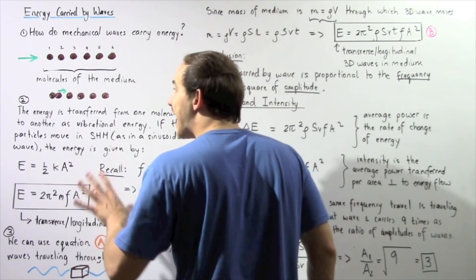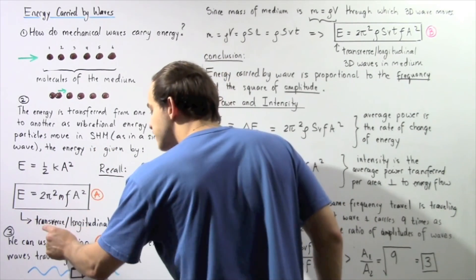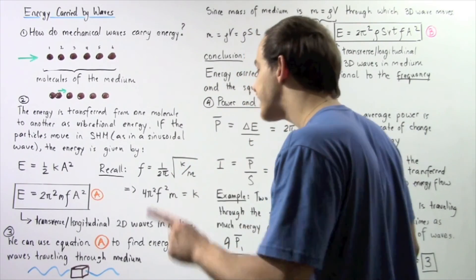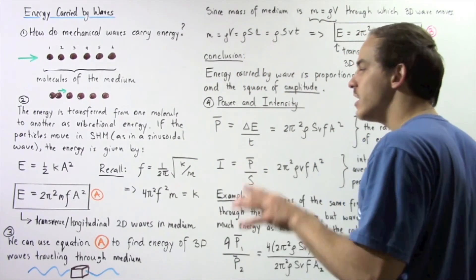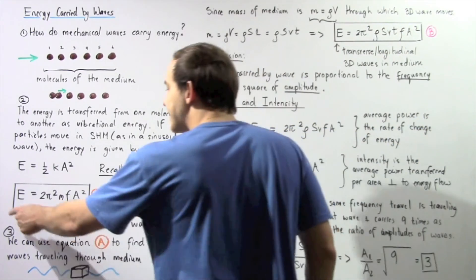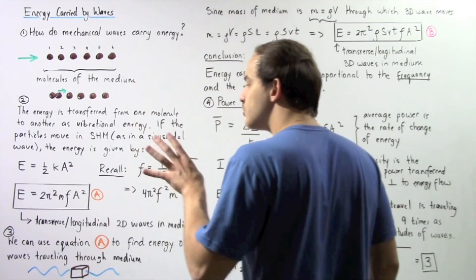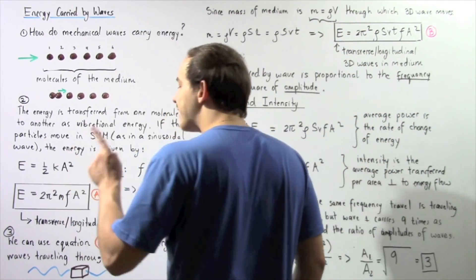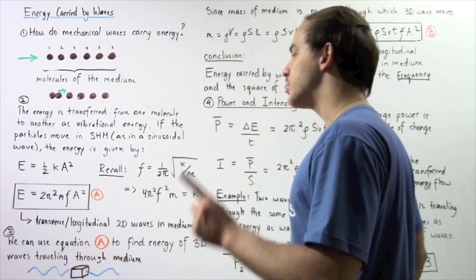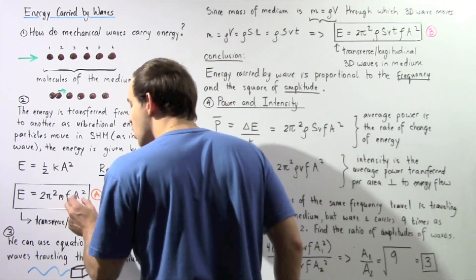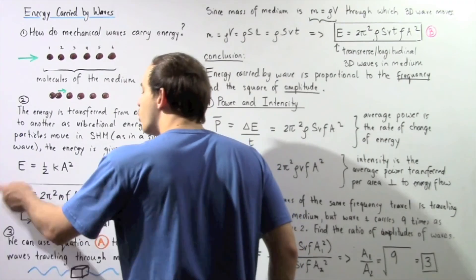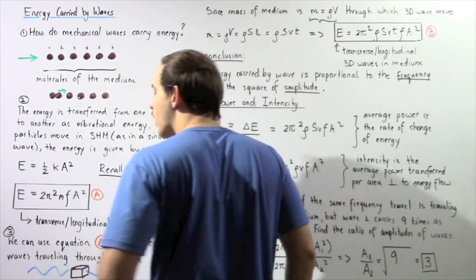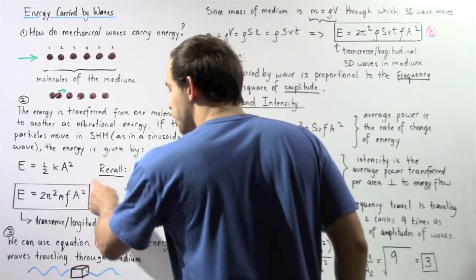Equation A gives the energy for a transverse or longitudinal mechanical wave traveling along a two-dimensional plane through some medium. We see that the energy of the propagating two-dimensional wave is directly proportional to the frequency and directly proportional to the square of the amplitude. If we double the frequency, we double the energy. If we double the amplitude, we quadruple the energy because of the square term.